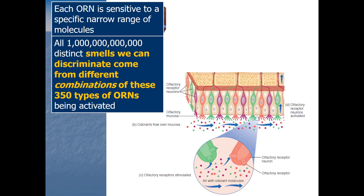With 350 different types of ORNs — like 350 different light switches that could be set on or off — we get an unimaginably large variety of combinations. The first type on but not others is one combination; the second type on but not others is another. And there are combinations like switches 1, 7, 13, 25, 34, 65, 124, 253, and 350 all on but not the others. Mathematically, that's 2 to the 350th power — a number our human brains can't possibly comprehend.